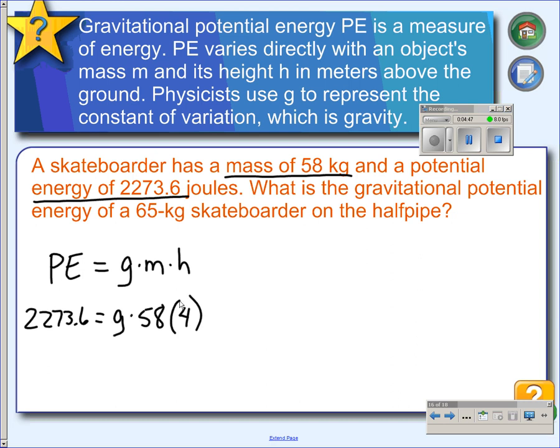If you're up on all your physics stuff, you're going to know the answer to G already, but we'll actually do the math. We're going to multiply 58 times 4, and then we'll take 2,273.6 and divide by that answer.